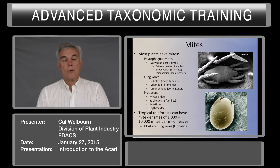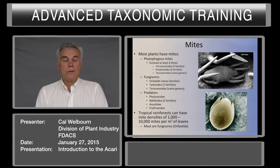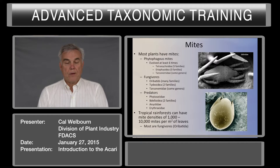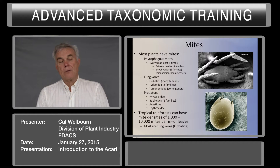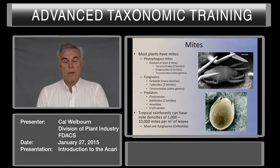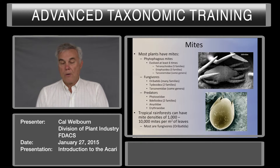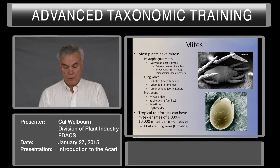Predators include the Phytoseiidae, the Bdelloidea, Anistidae, and Erythraeidae. Tropical rainforest can have mite densities of 1,000 to 10,000 mites per square meter of leaf surface, although most of these are fungivores, the oribatids.